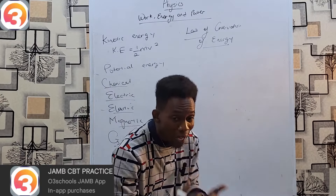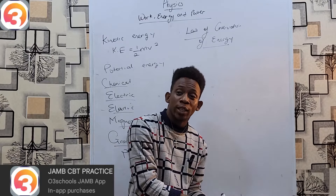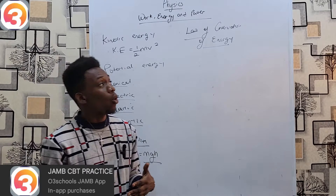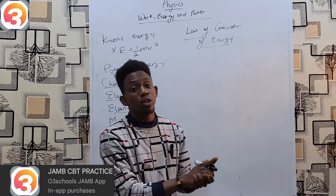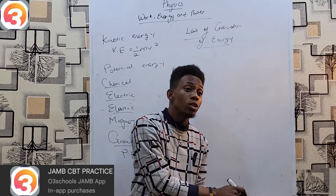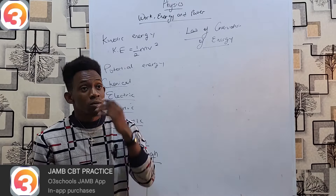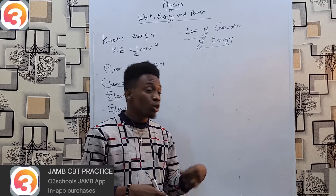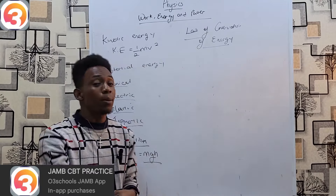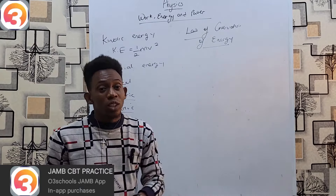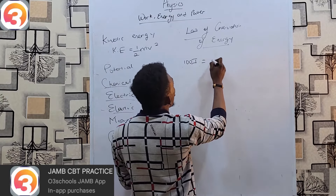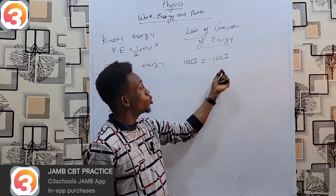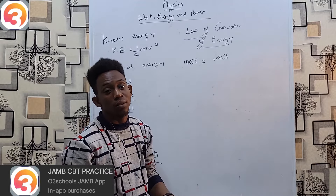For example, when you iron your clothes you plug in the iron, taking electrical energy. That energy doesn't get wasted — it gets transformed into thermal energy (heat), which you use to press your clothes. Or when you switch on a generator: you put in fuel (chemical energy), which makes the engine work, producing electrical energy. That electrical energy can be transformed by a fan into kinetic energy, by a bulb into light energy, or by a heater into thermal energy. The important principle is that if you start with 100 joules of energy, you should end with 100 joules, just in a different form.